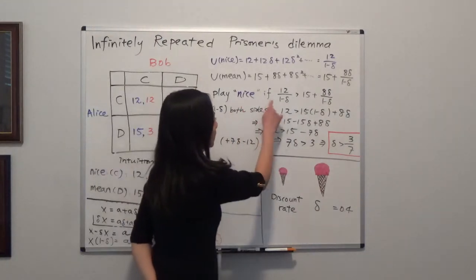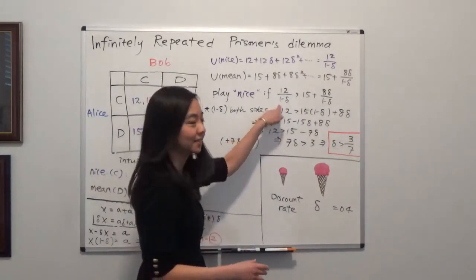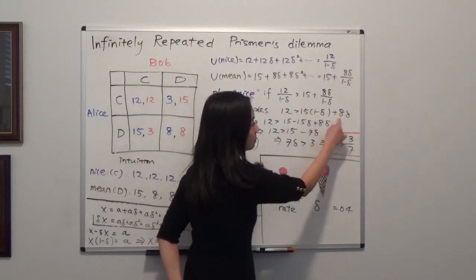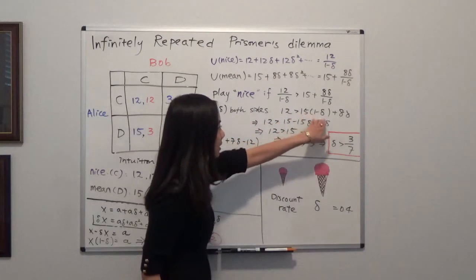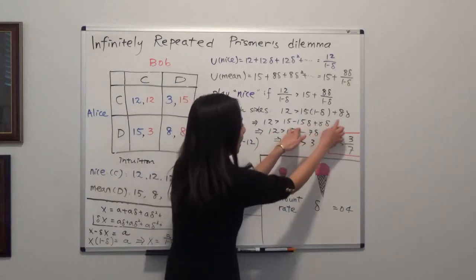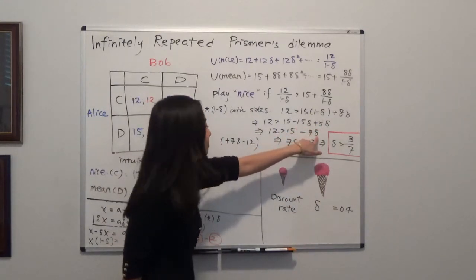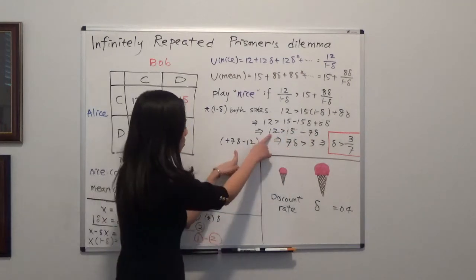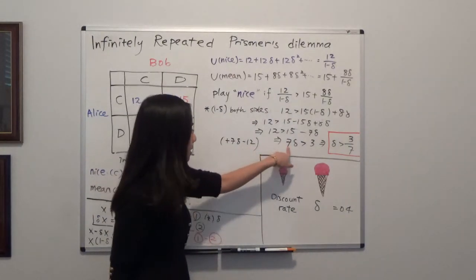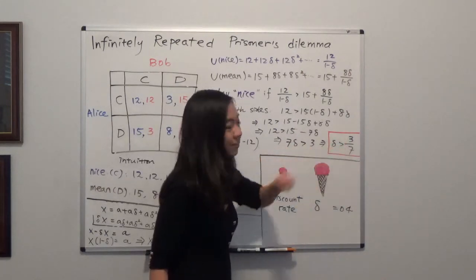To derive it algebraically: start with 12/(1−δ) > 15 + 8δ/(1−δ). Multiply both sides by (1−δ): 12 > 15(1−δ) + 8δ. Expand: 12 > 15 − 15δ + 8δ, which gives 12 > 15 − 7δ. Add 7δ and subtract 12 from both sides: 7δ > 3. Divide by 7: delta > 3/7.